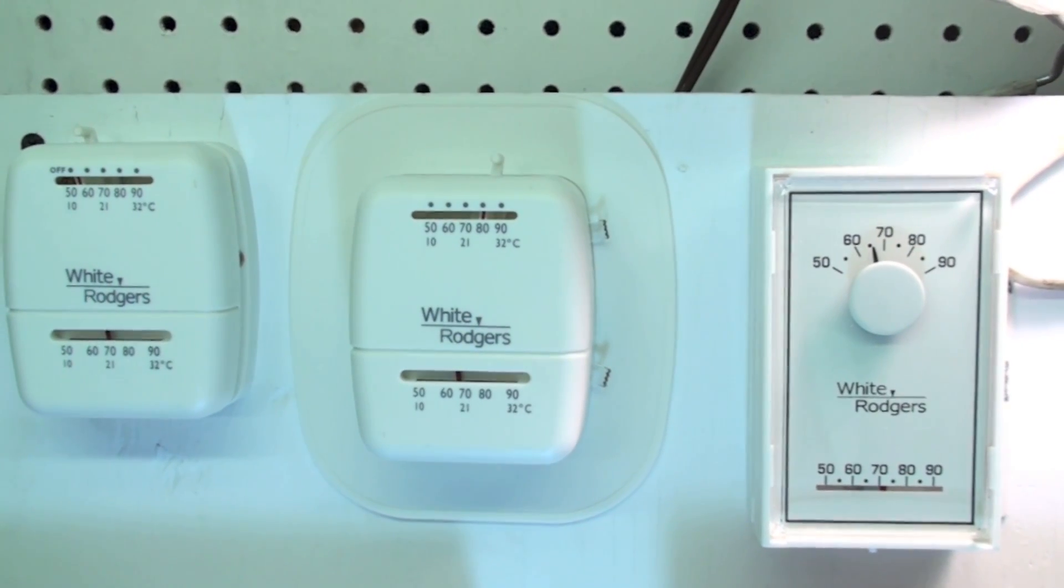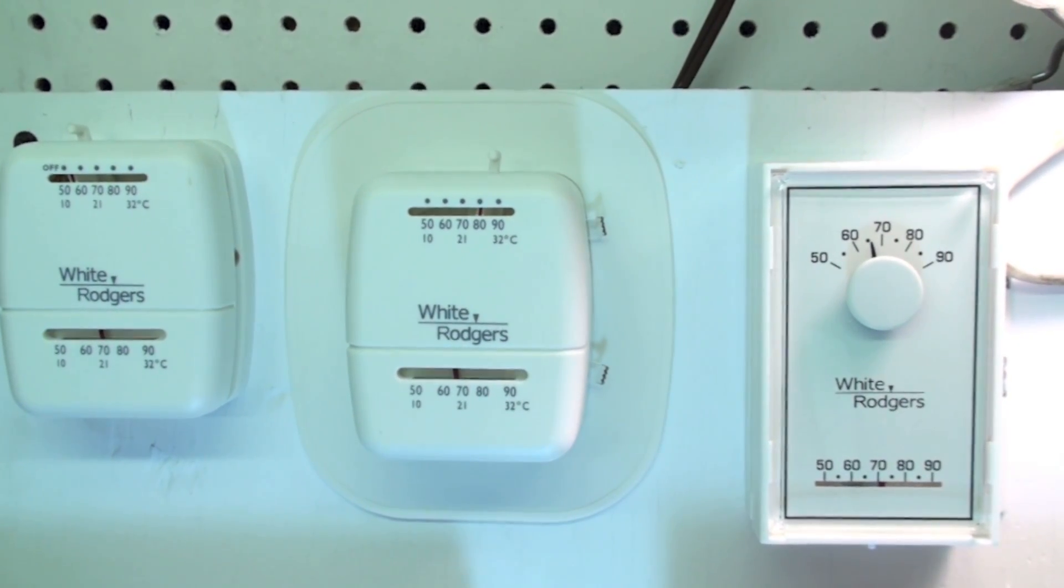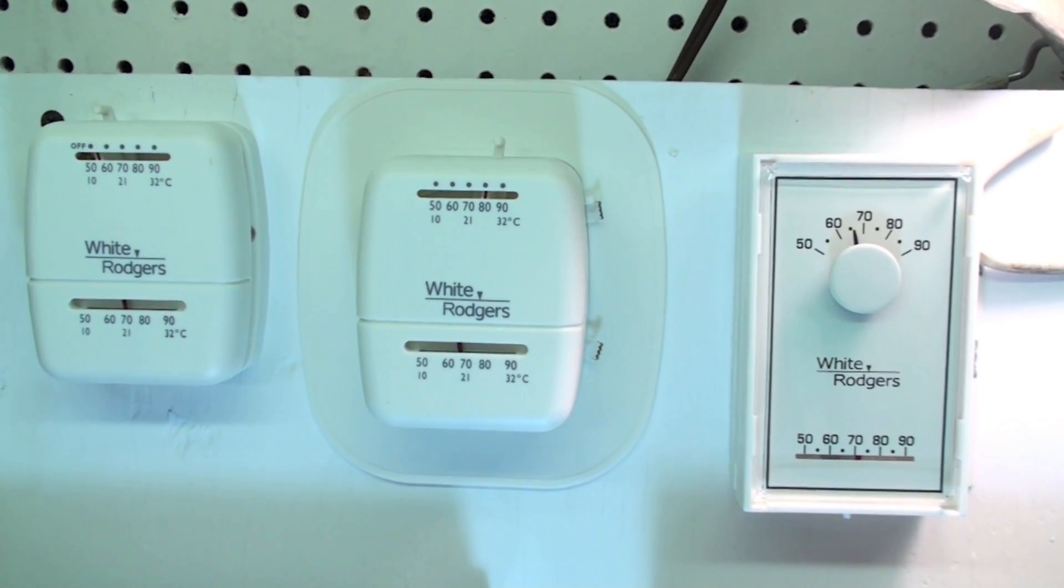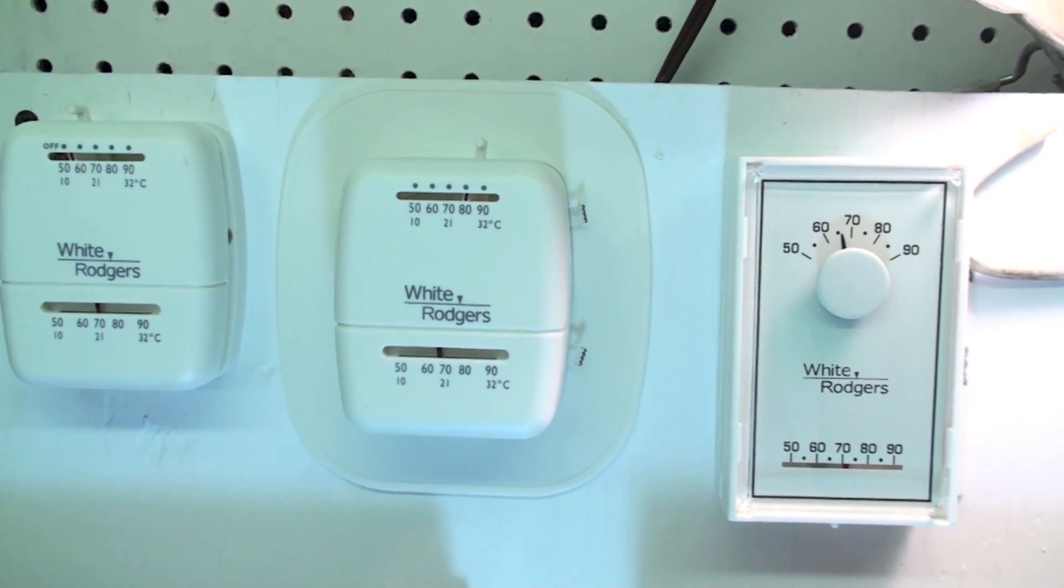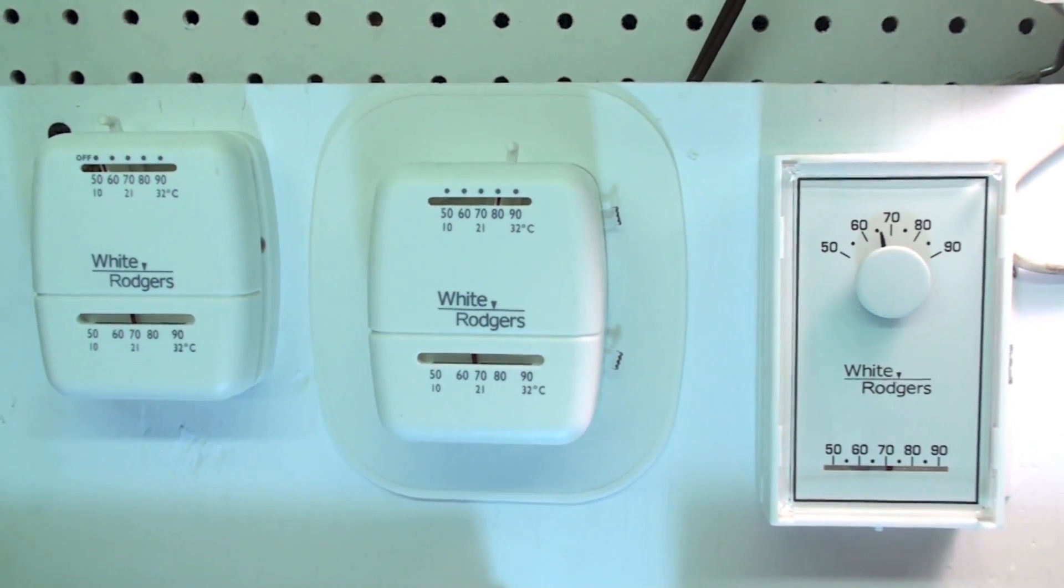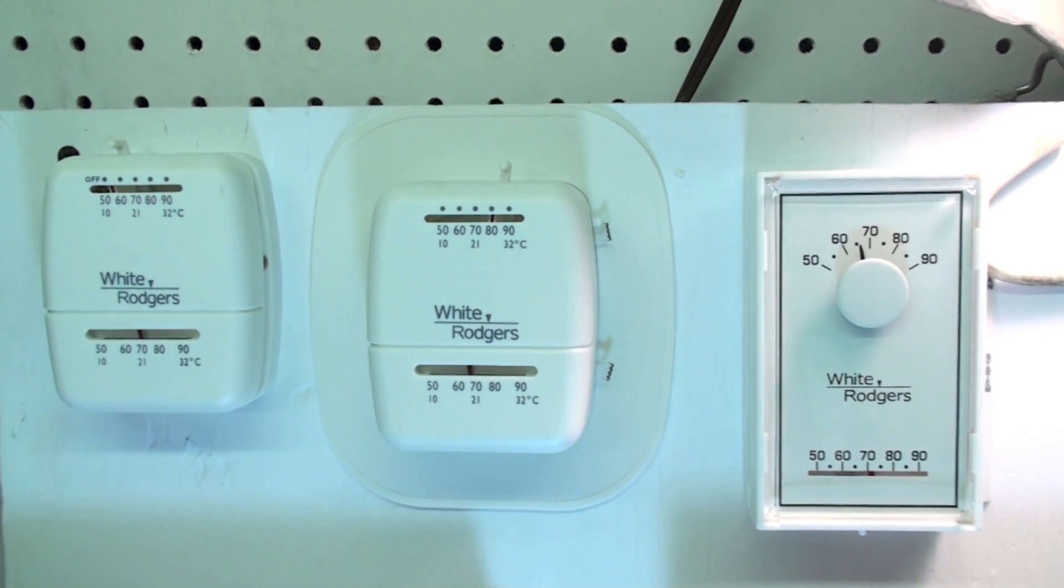Okay, this one's on how to set the anticipator for the mechanical thermostat. First thing, your thermostat must be mechanical. It can't be electronic to set this.